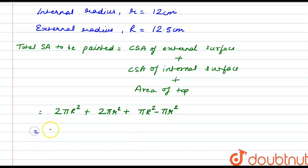So on putting the values here, we have 2π(12.5)² plus 2π(12)² plus π taking common, 12.5² minus 12².